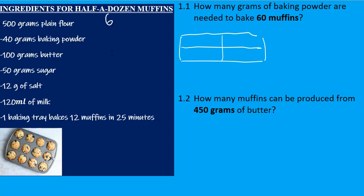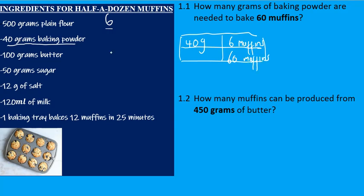Question 1.1: How many grams of baking powder are needed to bake 60 muffins? Here's the baking powder — 40 grams of baking powder will give you six muffins, since the ingredients are for six. So the question is: how much baking powder will you need for 60 muffins?